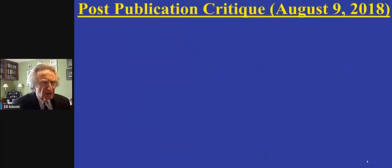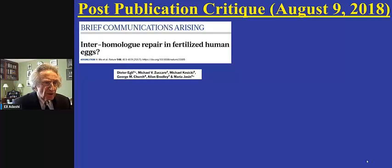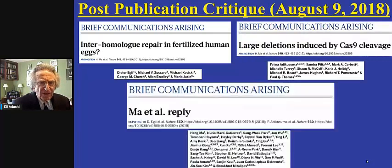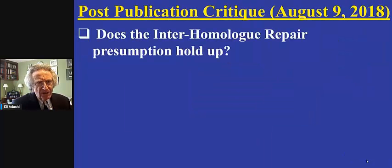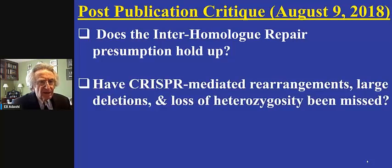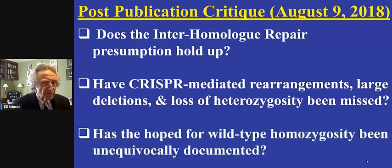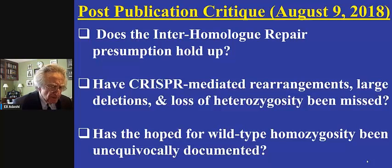Immediately post-publication, a number of critiques appeared on the pages of the Nature journal on August the 9th, 2018. One argued that the inter-homolog repair in fertilized human eggs probably did not occur, and similar and additional comments saw press as well. Essentially, the critiques focused on the questions: does the inter-homolog repair actually hold up? Have CRISPR-mediated rearrangements, large deletions, and loss of heterozygosity been missed by the authors? And has the hoped-for wild-type homozygosity been unequivocally documented? In other words, the paper left us with all kinds of uncertainties which had to be resolved later.